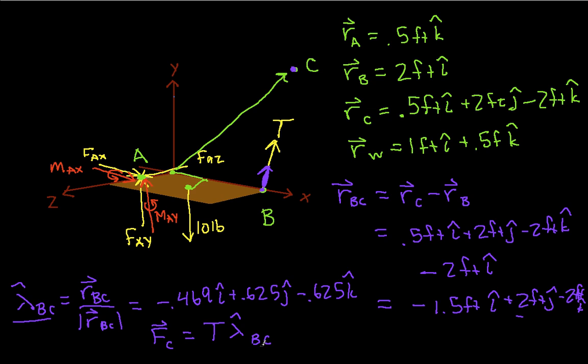The next thing we'll do is we'll find moments about the point A. And the reason I will choose the point A is because FAx, FAy, and FAz will go through this point A, so they're not going to contribute to any moments, which will make my computation simpler. But I'm out of time for this video, so we'll do that in the next installment.